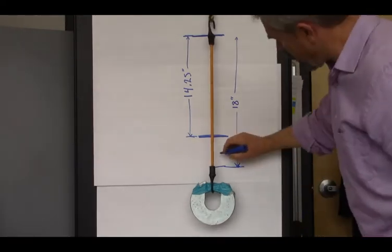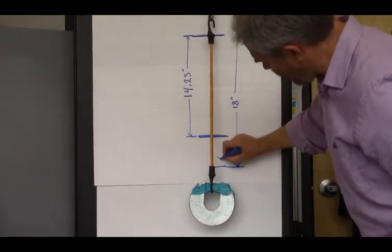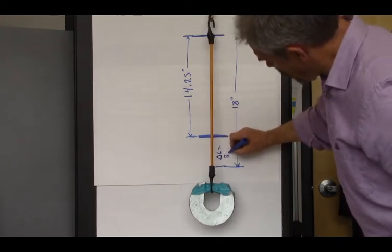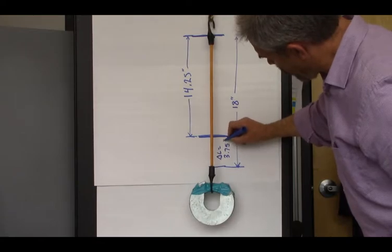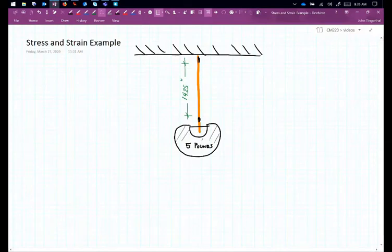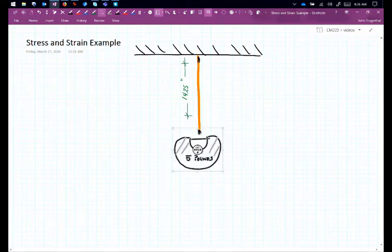So our delta L, our change in L, is 3.75 inches. Now let's calculate the stress and strain in the bungee cord under the weight. It starts out at 14.25 inches long. Once we put the weight on it stretches down and the final dimension is 18 inches. So that's our new dimension.